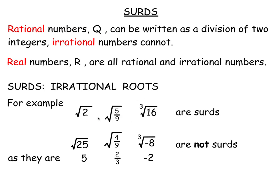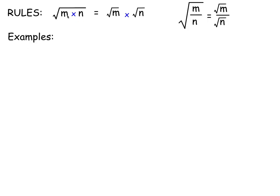Most roots are irrational and are surds; roots like those examples are rational. There are rules for all roots. If you've got a root of a product — one number m times another number n — you can split the root up: root of m times n equals root m times root n. You can split up a division in the same way: root of m divided by n equals root m divided by root n.